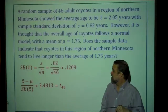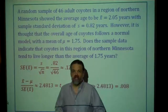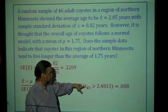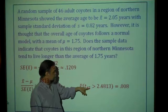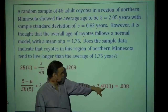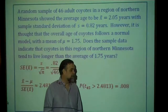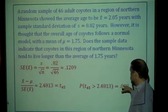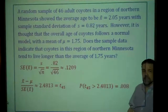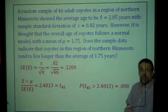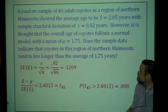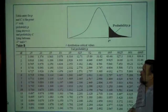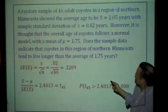We're not quite sure how high the p-value is without calculating it. Using a calculator, we find that the probability that a t random variable with 45 degrees of freedom is greater than 2.4813 is slightly less than 1%. That is our p-value. Since it's so small, I would reject the null hypothesis and say: yes, this gives us evidence that the coyotes in this region tend to live longer than the average of 1.75 years.